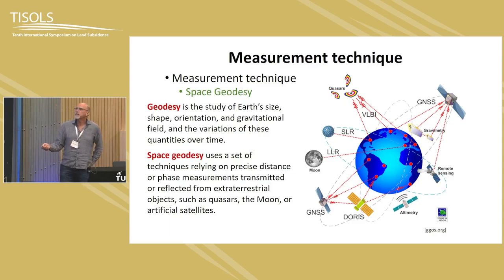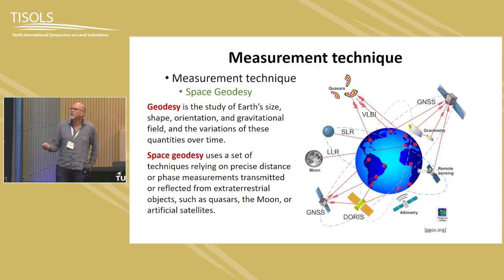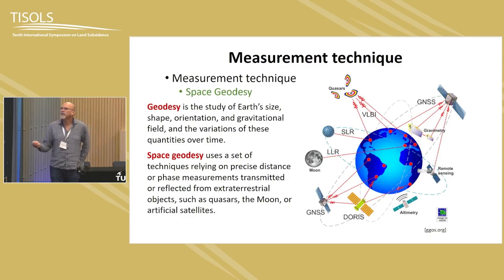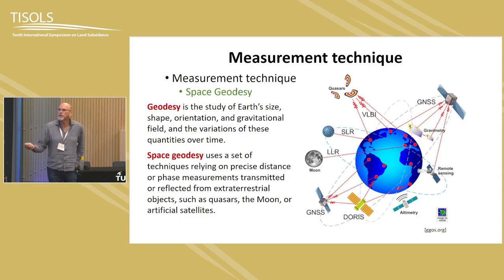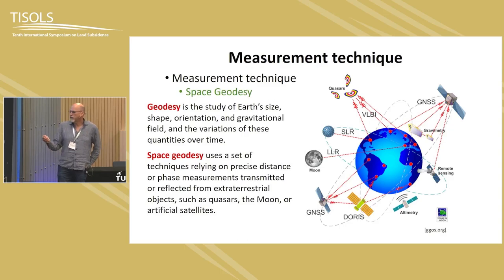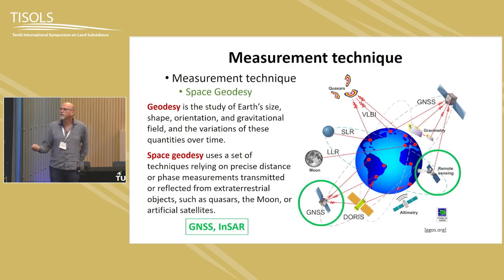Space geodesy is a set of technologies to study geodesy — one of the earliest sciences — involving the study of the Earth's size, shape, orientation, gravitational field, and their changes over time. Since the space geodesy revolution beginning in the 1980s, even the 1970s, a whole set of techniques and technologies were developed. We will focus on two of them: GNSS and remote sensing or InSAR.